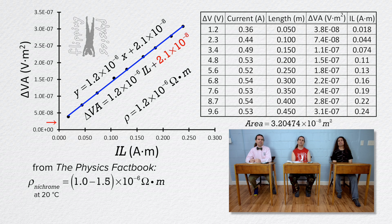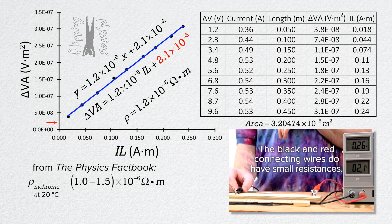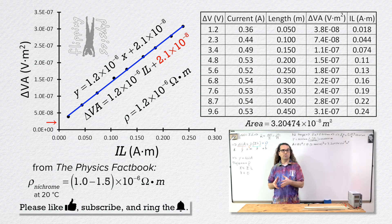But what about the y-intercept? I thought the y-intercept was supposed to be zero. Why is it not zero? The y-intercept has a small positive value instead of zero most likely because the black and red wires do not have zero resistance. The electric potential difference displayed on the power supply is across the terminals of the power supply. We assumed the electric potential difference between the two alligator clips at the nichrome wire was the same, but that would only be true if the black and red wires have zero resistance. In reality they do have small resistances, which means the electric potential difference between the two alligator clips is a little bit smaller than what we measured, making the y-intercept not quite equal to zero.